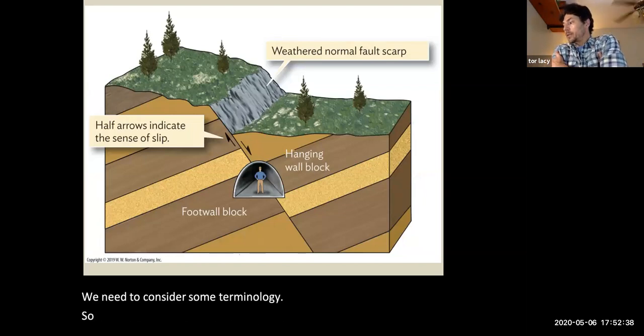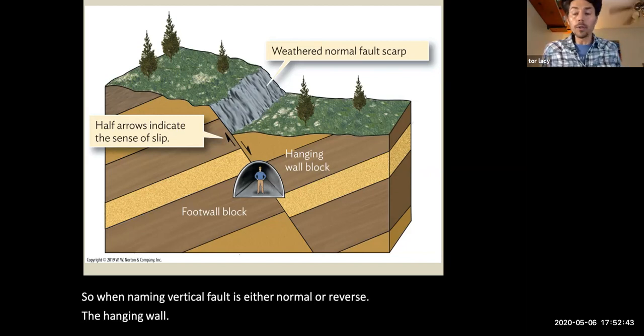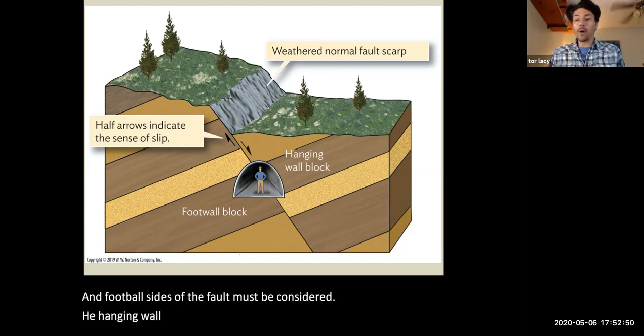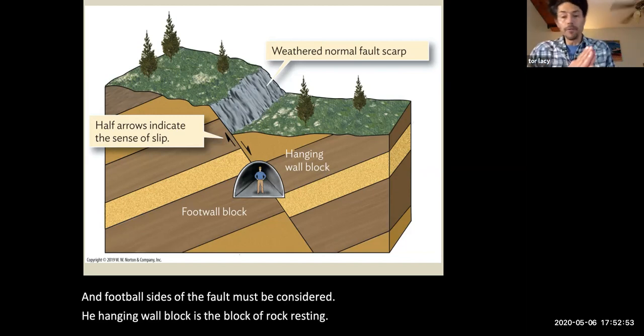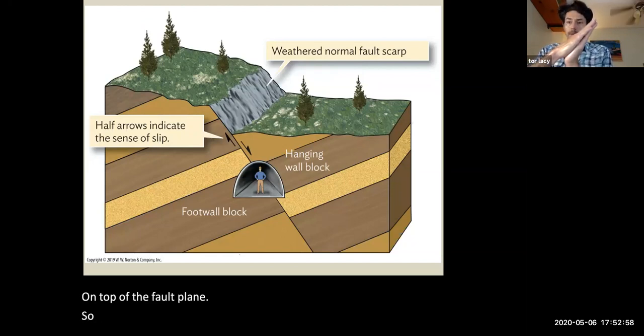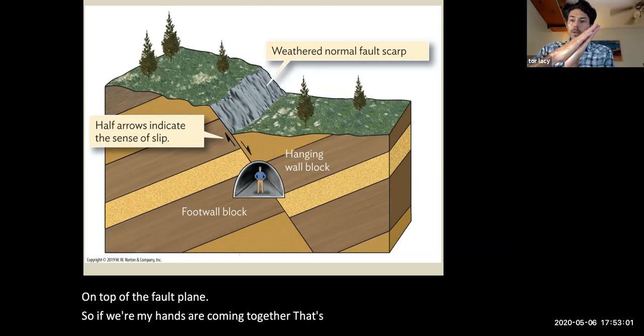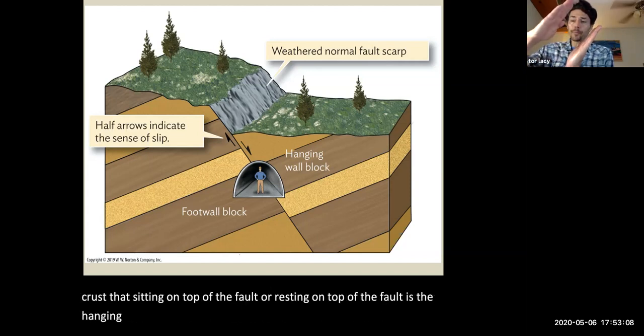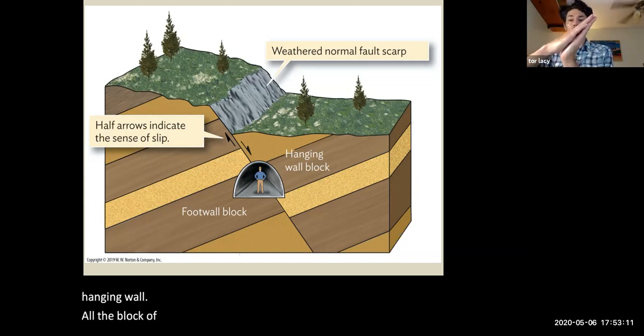So when naming vertical faults as either normal or reverse, the hanging wall and foot wall sides of the fault must be considered. The hanging wall block is the block of rock resting on top of the fault plane. So where my hands are coming together, that's the fault. The block of crust that's sitting on top of the fault or resting on top of the fault is the hanging wall. While the block of crust beneath the fault plane is the foot wall.